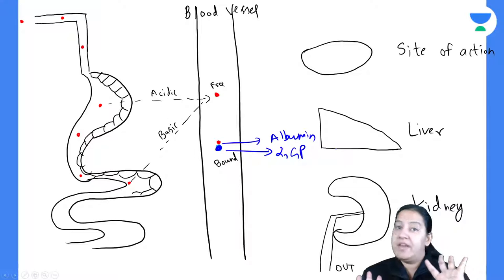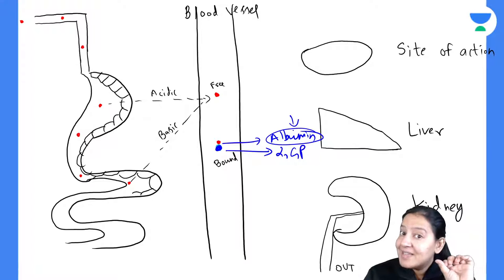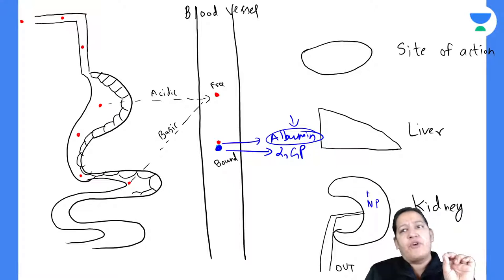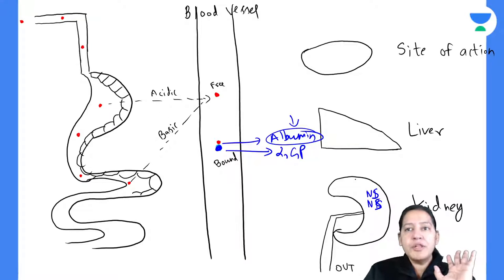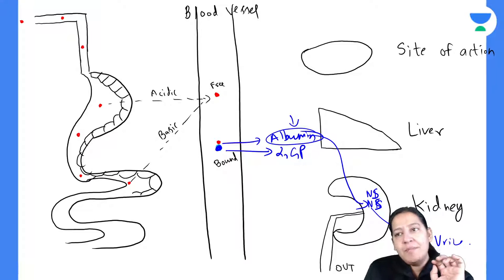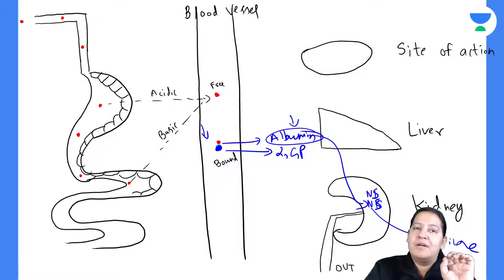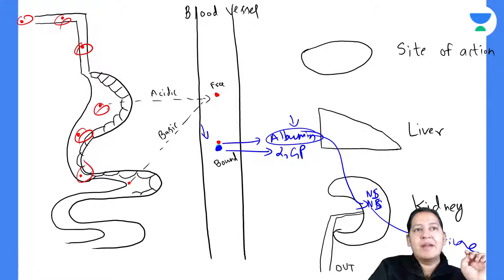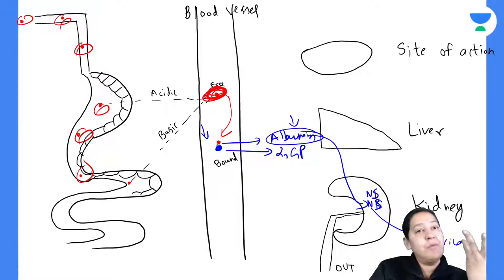There are some diseases in which albumin is less in human blood — for example, nephrotic syndrome. In nephrotic syndrome, all protein, especially albumin, is lost in urine. So albumin is less in the blood. If an acidic drug is supposed to bind with albumin but albumin is absent, the bound form will be less and the free form will be more.